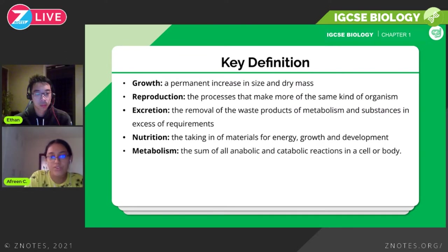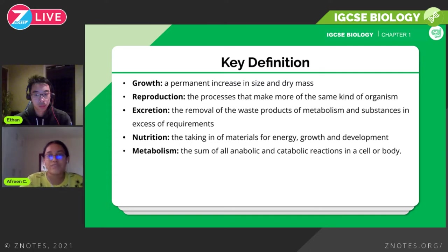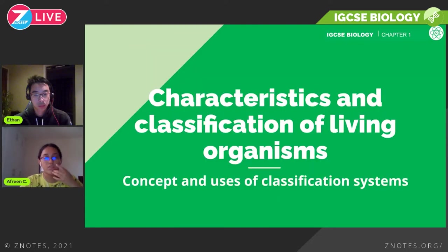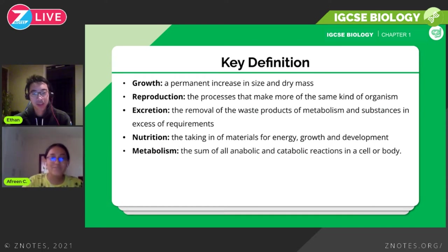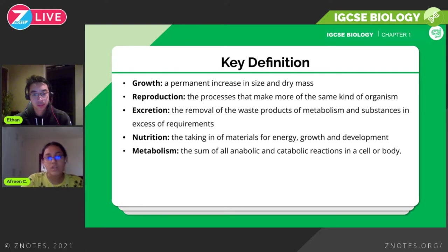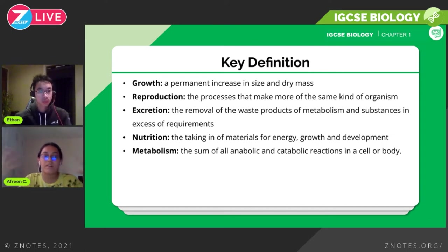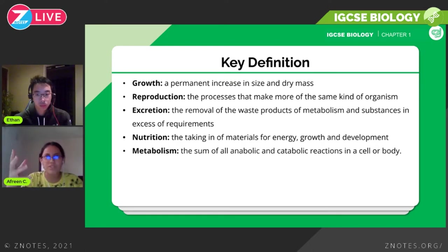Growth is a permanent increase in size and dry mass. So from age five to fifteen you can see the change — you're growing all the time, and that's another thing that makes a living organism a living organism. Then we have reproduction: the process that makes more of the same kind of organism. It's very important for all living organisms to keep the species alive, and reproduction plays a key role in that.